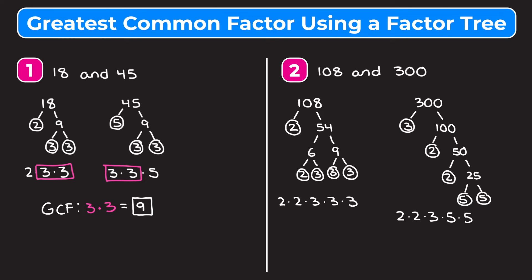Now we have to see which prime factors they have in common. They each have two twos, so let's circle those. 108 doesn't have any fives in its prime factorization, so the fives in 300 don't matter. They both have at least one three, so we only circle one three — even though 108 has three threes, 300 only has one three, so we circle only what they have in common. Our greatest common factor is those circled numbers multiplied together: two times two times three. Two times two is four, times three is 12. The greatest common factor between 108 and 300 is 12.